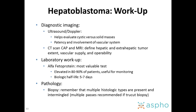The workup of hepatoblastoma always starts with a good exam, then diagnostic imaging. Ultrasound with Doppler helps evaluate cystic versus solid masses and the patency and involvement of the vascular system. CT scan of chest, abdomen, and pelvis, or an MRI, defines disease extent, vascular supply, and operability. Laboratory workup always needs to include alpha-fetoprotein — it's the most valuable test, elevated in around 90% of cases. The biologic half-life is around 5 to 7 days, which is important when monitoring response.